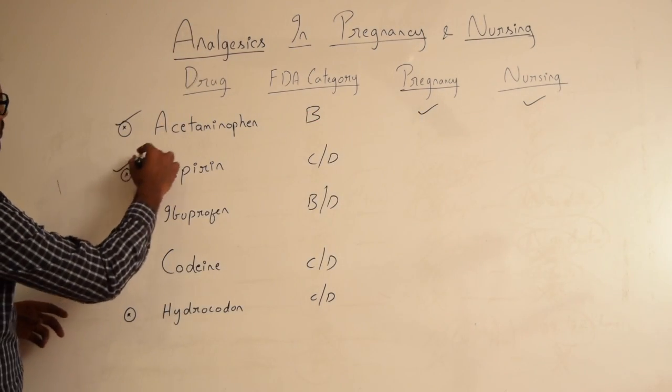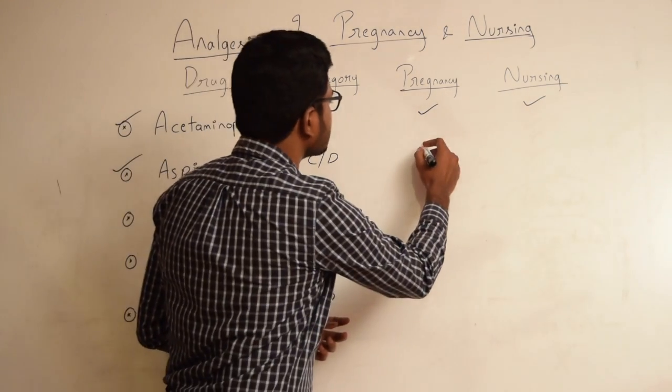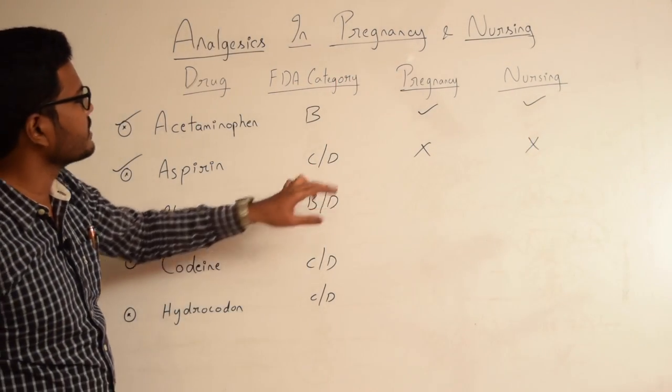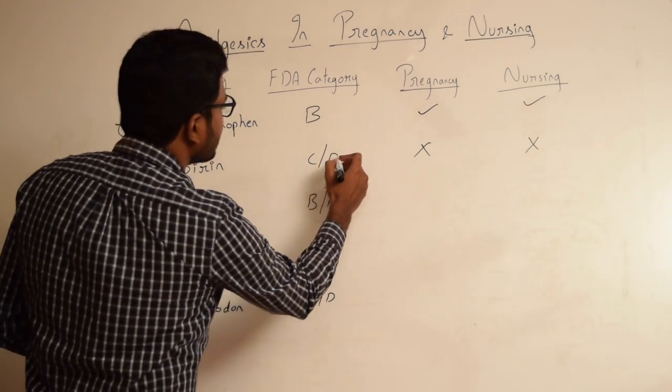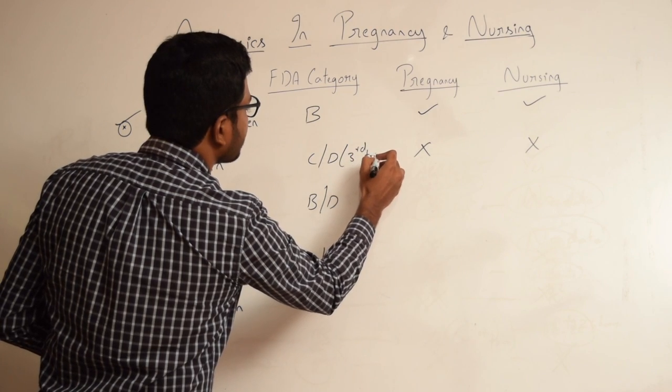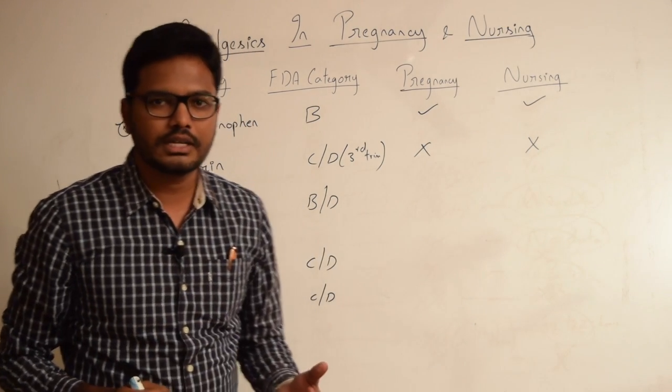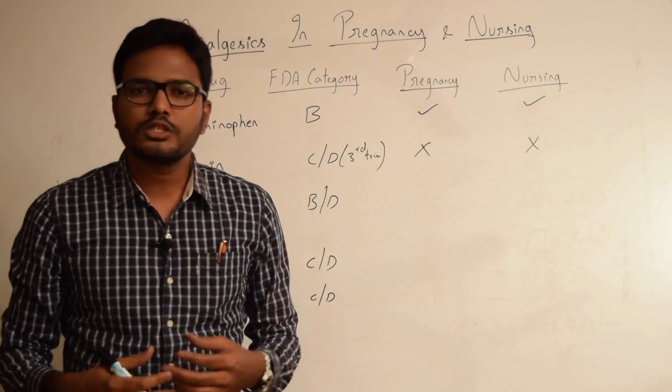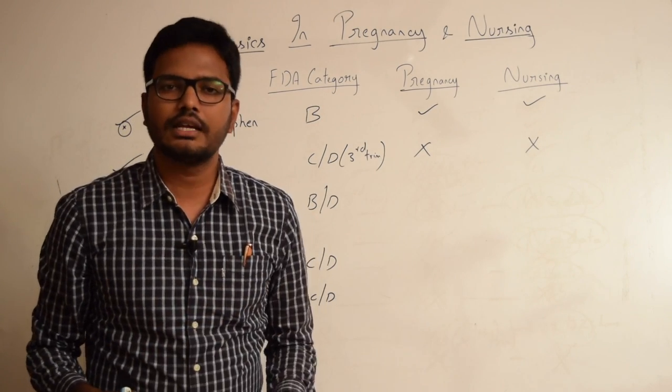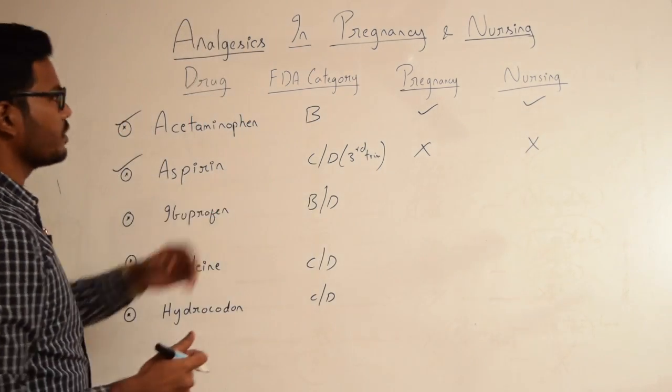Moving on to aspirin. As it belongs to FDA category C or D, it is usually not prescribed in pregnancy as well as in nursing. The reason is I have mentioned two categories here. As it's given in literature, it's considered to be a category D in third trimester of pregnancy. When it is administered in third trimester, there can be postpartum bleeding and other related complications and it is known to alter maternal as well as fetal hemostasis. That's the reason why it's contraindicated in pregnancy and also in nursing.